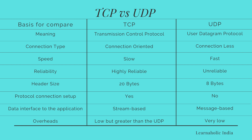Regarding overheads: in TCP it is low but greater than UDP; in UDP it is very low. For data quantity and suitability: TCP handles small to moderate amounts of data, whereas UDP handles small to enormous amounts. TCP is implemented in applications where reliable transmission matters, whereas UDP is used in applications where data delivery speed matters. Applications and protocols for TCP include FTP, Telnet, SMTP, IMAP, etc. Whereas for UDP: DNS, Bootstrap, DHCP, TFTP, etc.